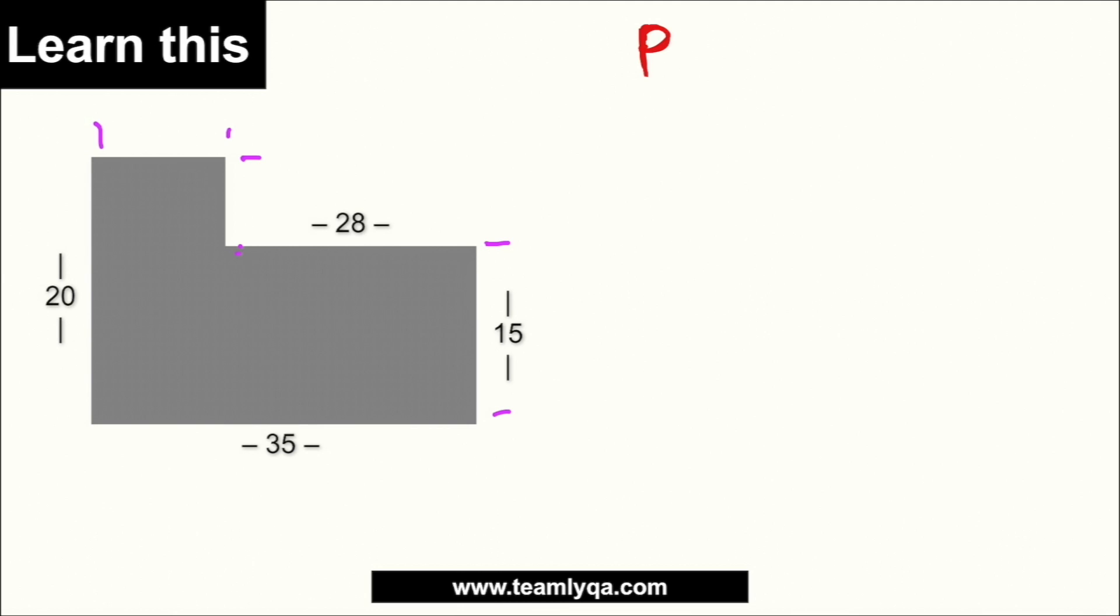So, kailangan mo ng konting creativity rin. If you notice, itong line na ito, na nakatayo na yan, at itong line na ito, na 15, pag pinagsama ko sila, diba, dahil flat itong shape na ito, pag pinagsama ko sila, kasing haba nila yung 20. Kasi pantay ito eh. Pantay ito, pantay ito. Pareho silang right angle.